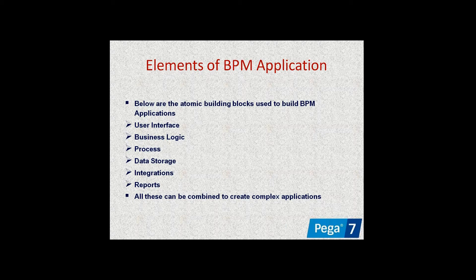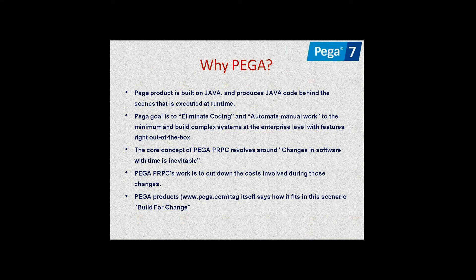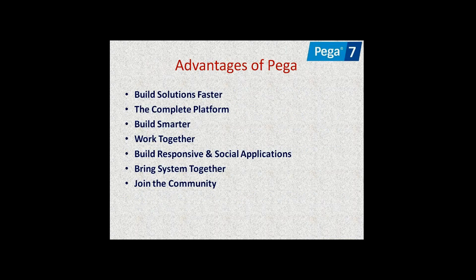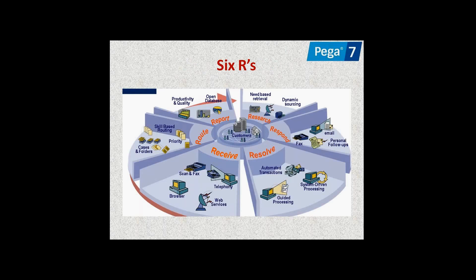Elements in Pega include user interface, business logic, process, data storage, integrations, reports, and more. Pega is a product of Java — one application designed using Java, and using it we can develop any type of application. Advantages include building applications faster, a complete platform, and building smarter applications with different teams. Pega has different roles: administrator, business analyst, manager, and system architect.